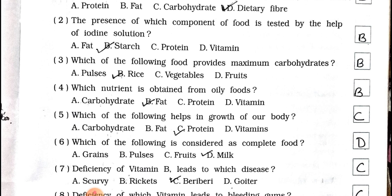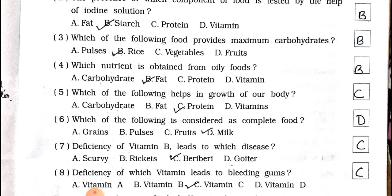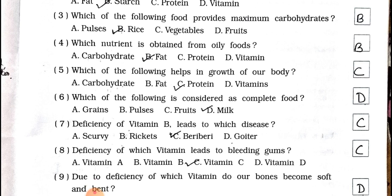Number three: which of the following food provides maximum carbohydrates? A) Pulses, B) Rice, C) Vegetables, D) Fruits. Answer is option B — Rice. Number four: which nutrient is obtained from oily foods? A) Carbohydrate, B) Fat, C) Protein, D) Vitamin. Answer is option B — Fat.